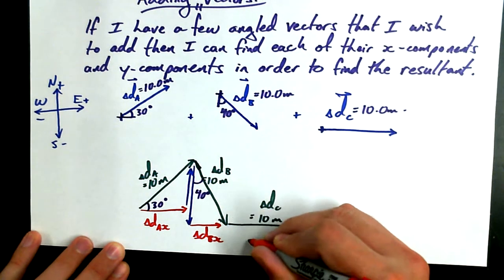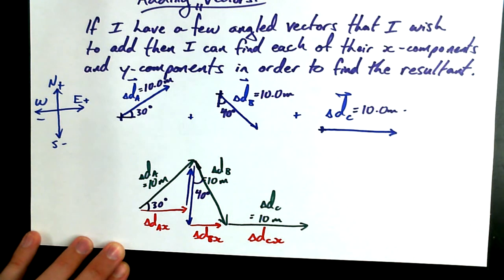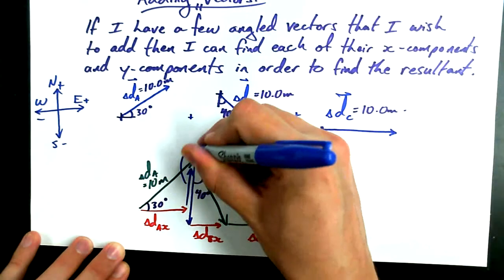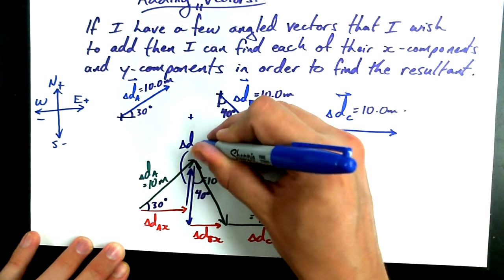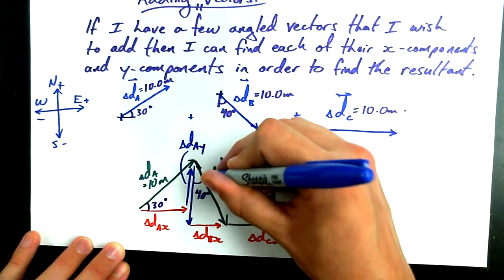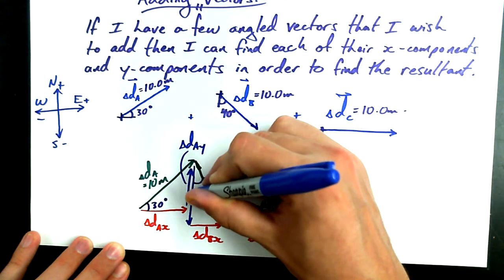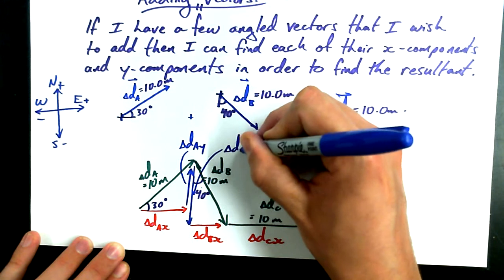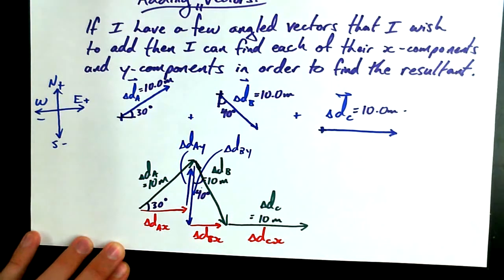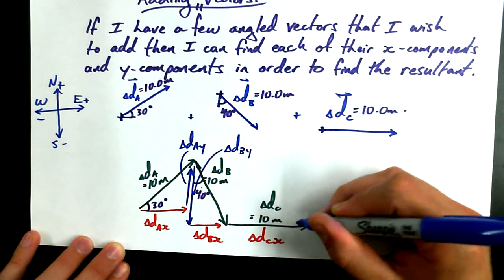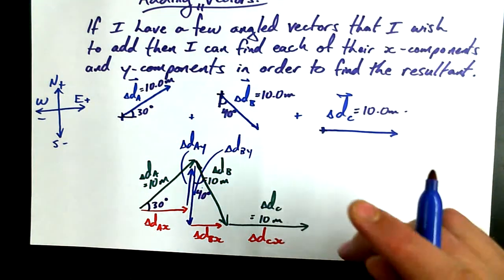and delta d C x. I'd also like to find some values that I'm going to call delta d A y, day, and delta d B y. And, of course, there is no y for the third one.